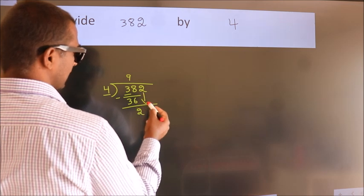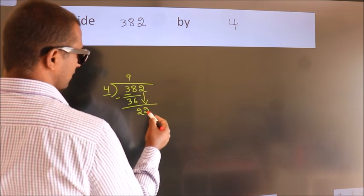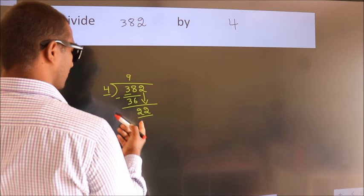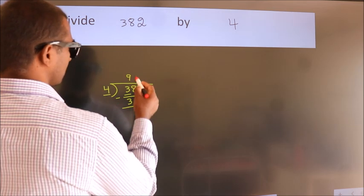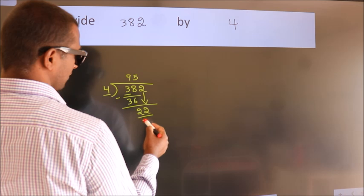After this, bring down the beside number. So 2 down. So 22. A number close to 22 in the 4 table is 4 fives, which is 20.